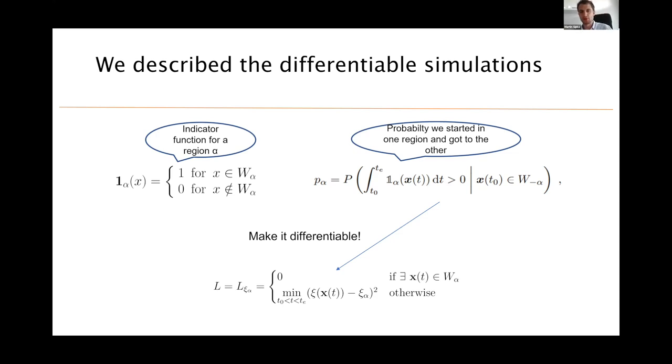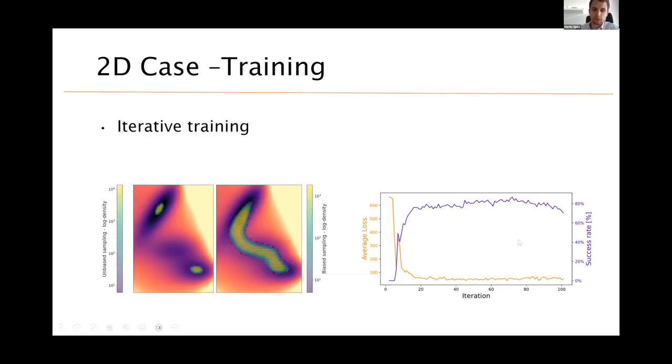Right. So this is the whole magic of making probabilities differentiable in our case. And this is how some results look like. This is the potential I've seen before. And after some training of 300 iterations, the log density of points, which is this yellowish color, which was before only in the minima, is now nicely sampled along the entire transition path. Right. That's what we want.